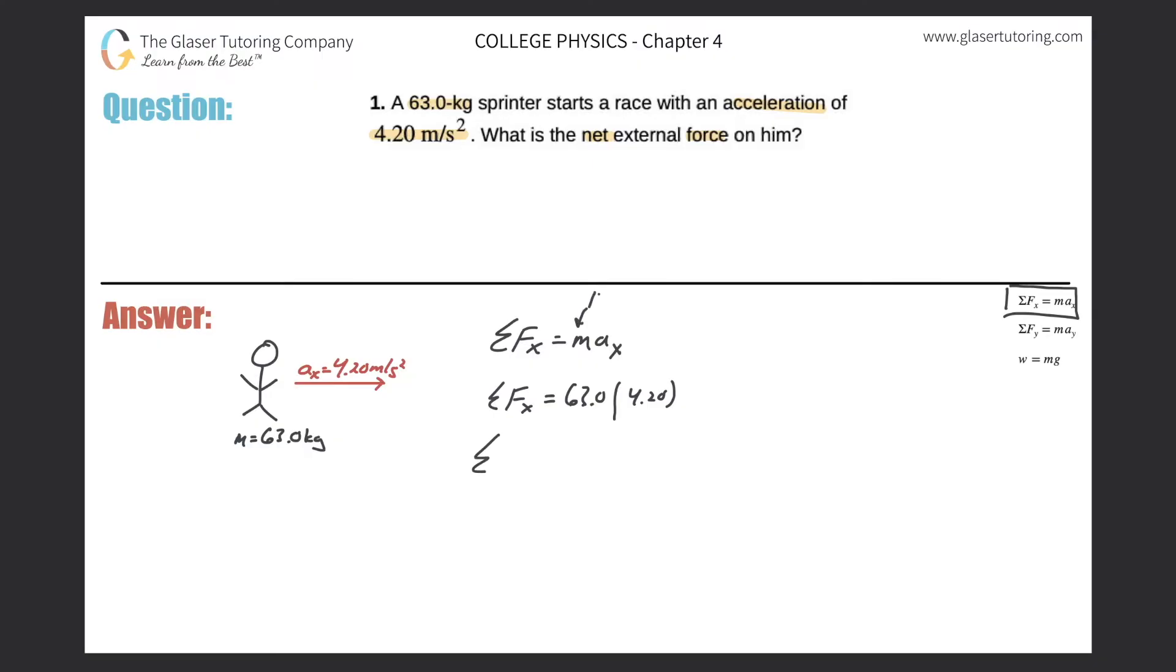Now the mass must be in kilograms, and the acceleration must always be in meters per second squared. So the sum of all the forces in that x direction will simply be 63 times 4.2. Don't forget significant figures. So in considering significant figures, we would round to 265.